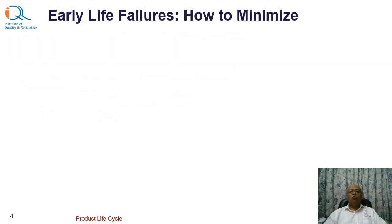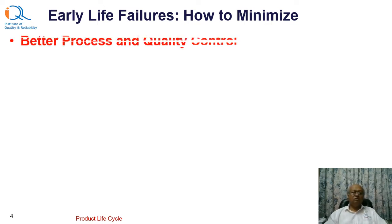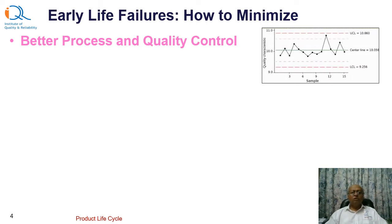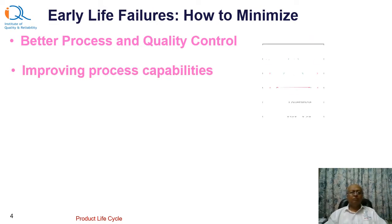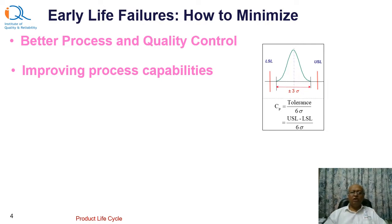Let us look at how to minimize or reduce the impact of early life failures. The first and foremost requirement is better process and quality control. There are many techniques such as statistical process control — the process parameters must be controlled exactly as the designer has designed the process. Better quality control would result in improved process capabilities, and we have to reduce the variation so that the process capability indices CP and CPK exceed the desired values, typically more than 1.5 or often 1.67.